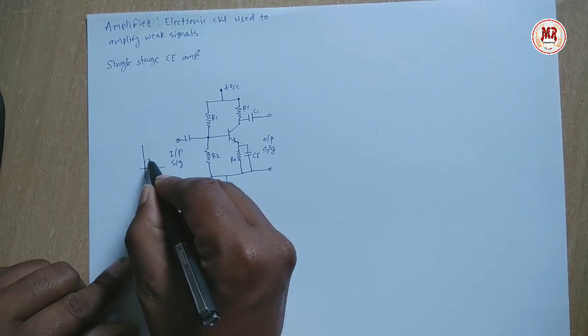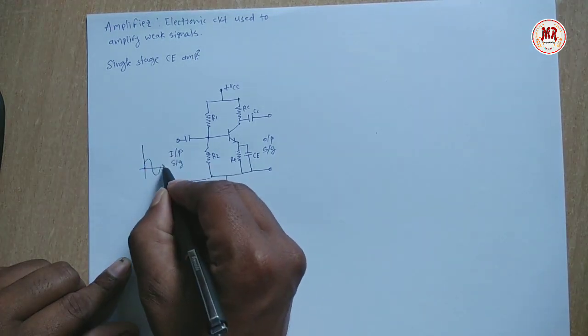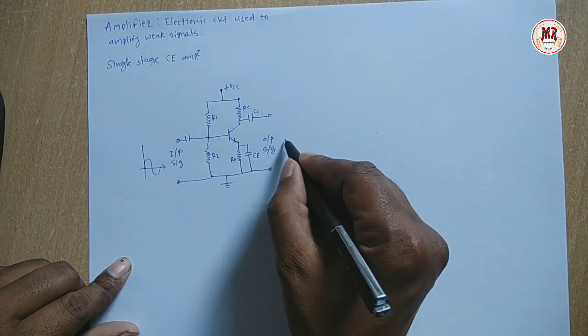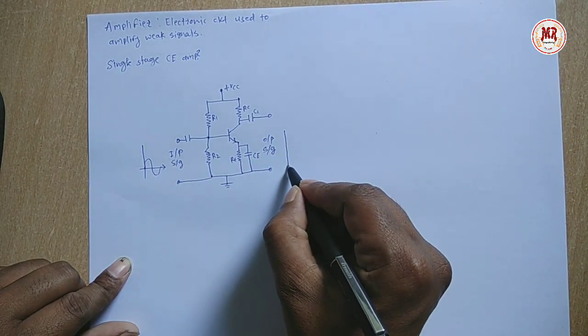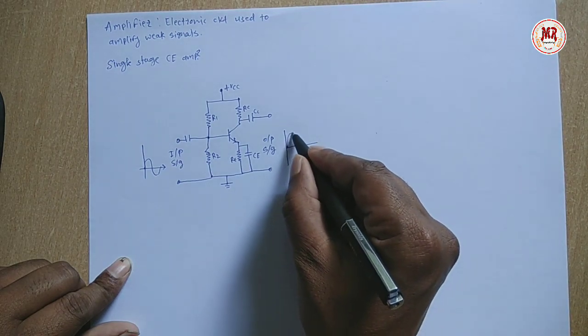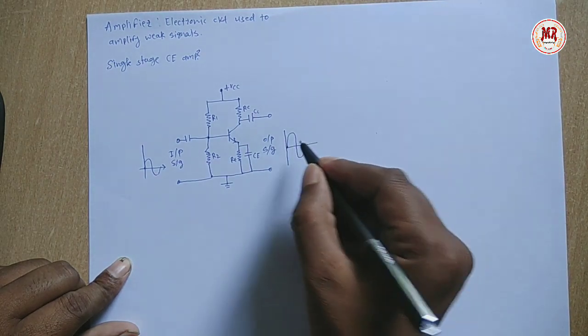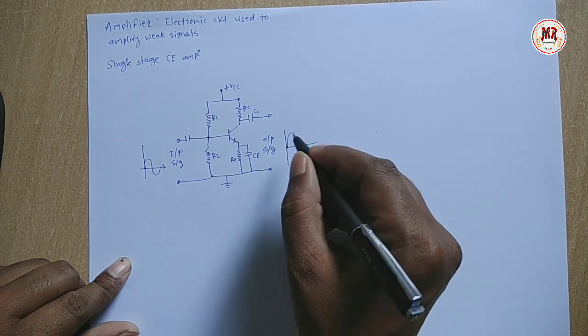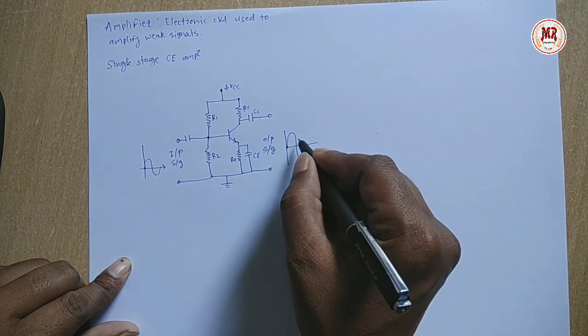Now this is the input signal. If input signal is sine wave, the property of transistor is to introduce 180 degree phase shift to the input signal. Consider this is input signal, which is sine wave.